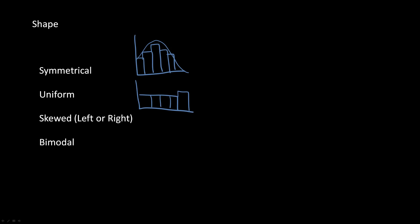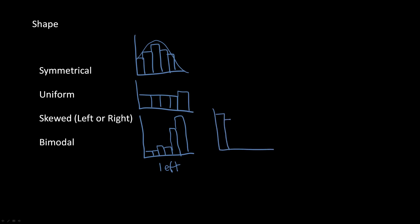The third type of shape is the skewed graph, which occurs when there is a tail trending off of the graph with larger values on one side than the other. A left-skewed graph has the tail on the left side of the graph. For a right-skewed graph, it looks like the opposite — the tail is on the right side of the graph.